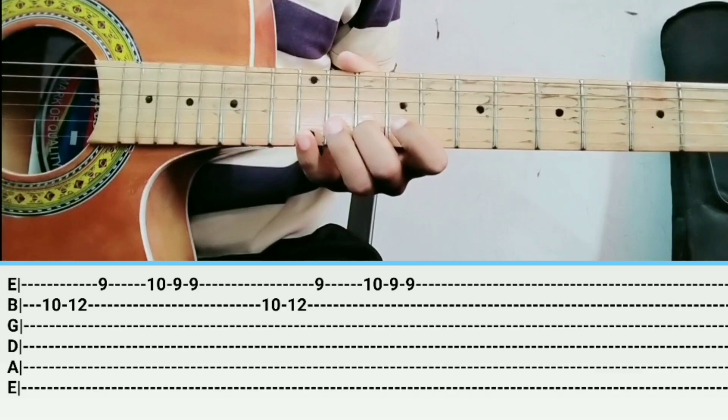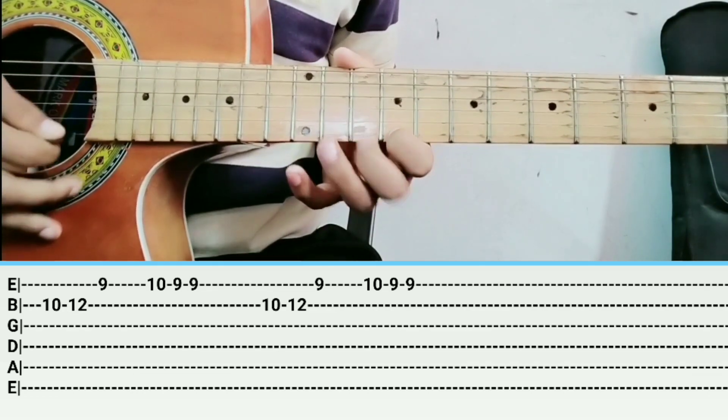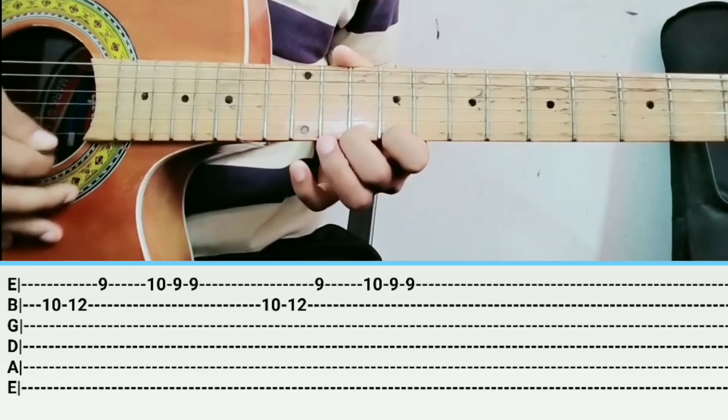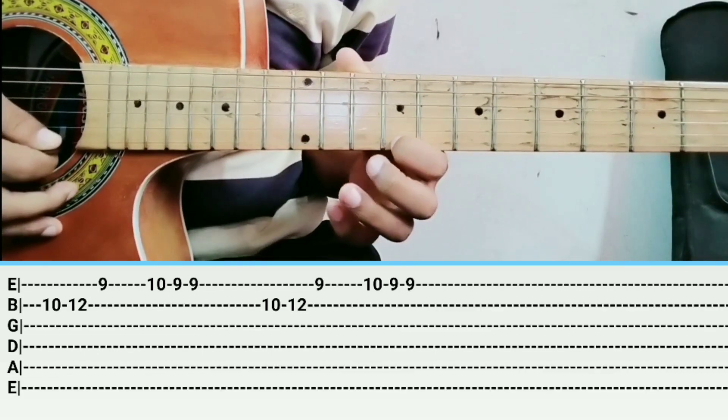How does this play? The play play. What is this? 10-12 is B string, 9 is E string.